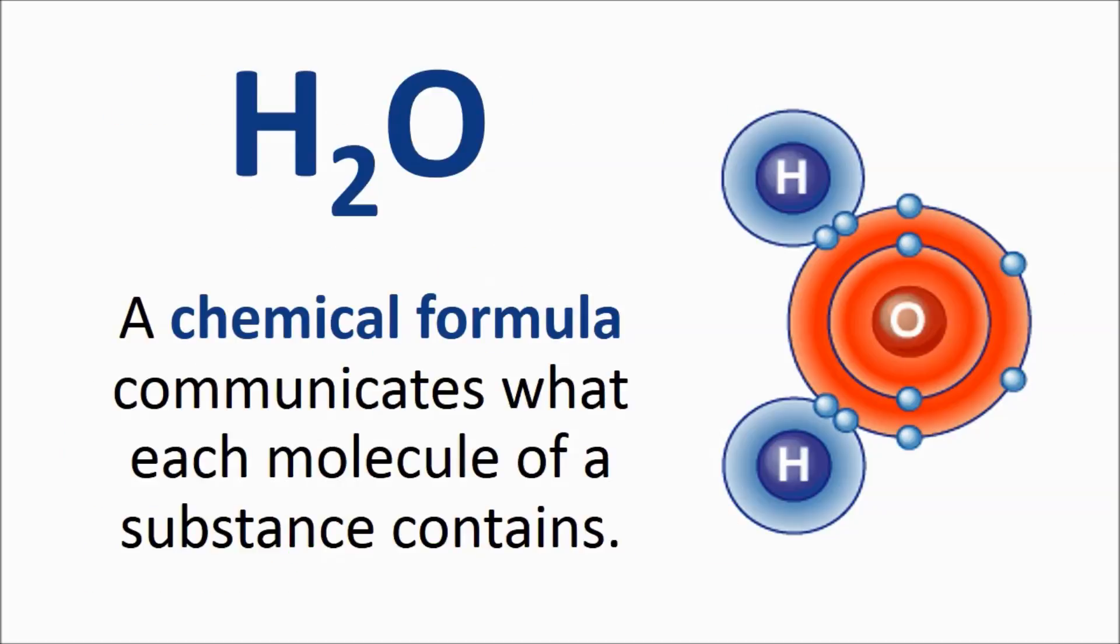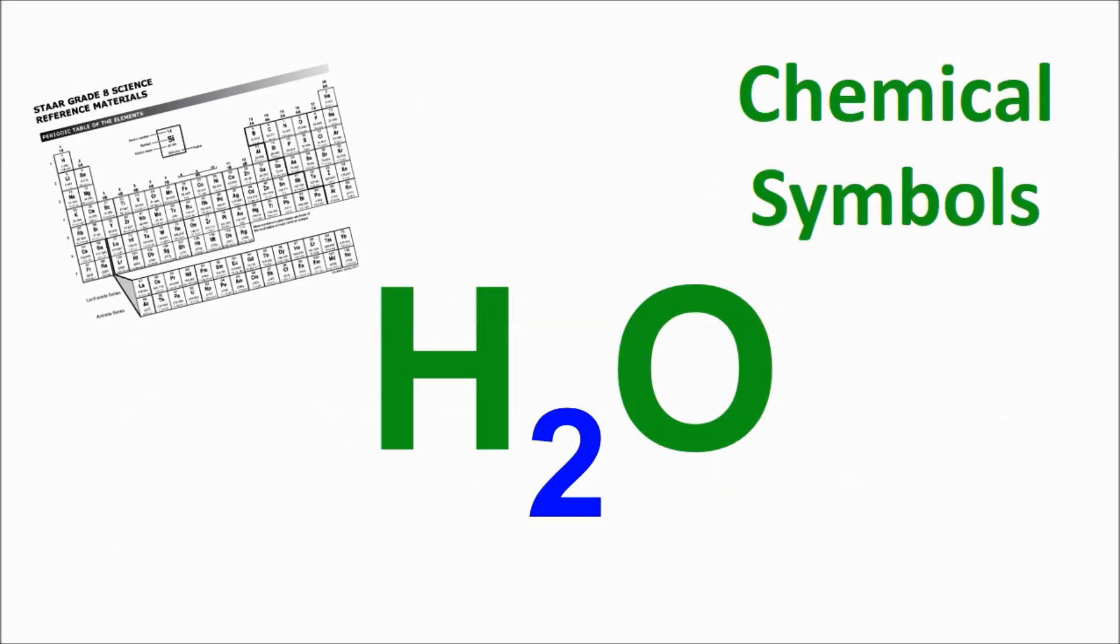A chemical formula communicates what each molecule of a substance contains. Chemical formulas use chemical symbols to show what elements are in the substance. Remember that these symbols are found on the periodic table, are always capitalized, and can be one or two letters.